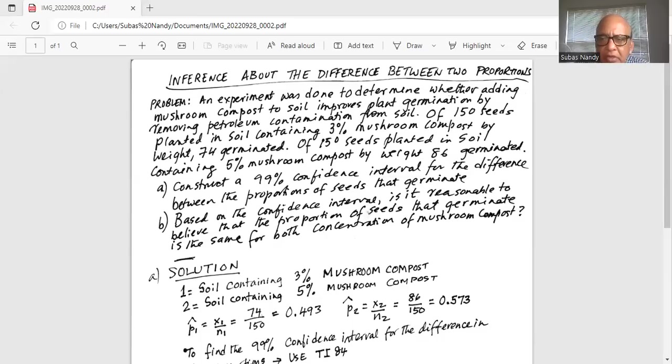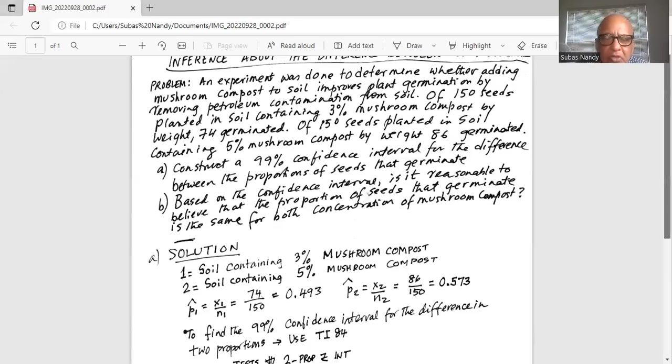Solution. Let us denote by 1 equals soil containing three percent mushroom compost and 2 equals soil containing five percent mushroom compost.